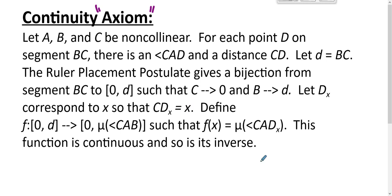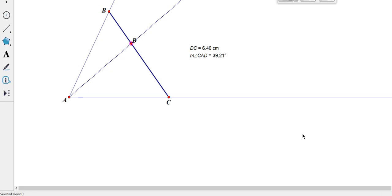Let capital D sub x correspond to x so that the distance from C to D sub x is x. So we let little d be the distance from B to C, and we let D sub x be the point that corresponds to x.